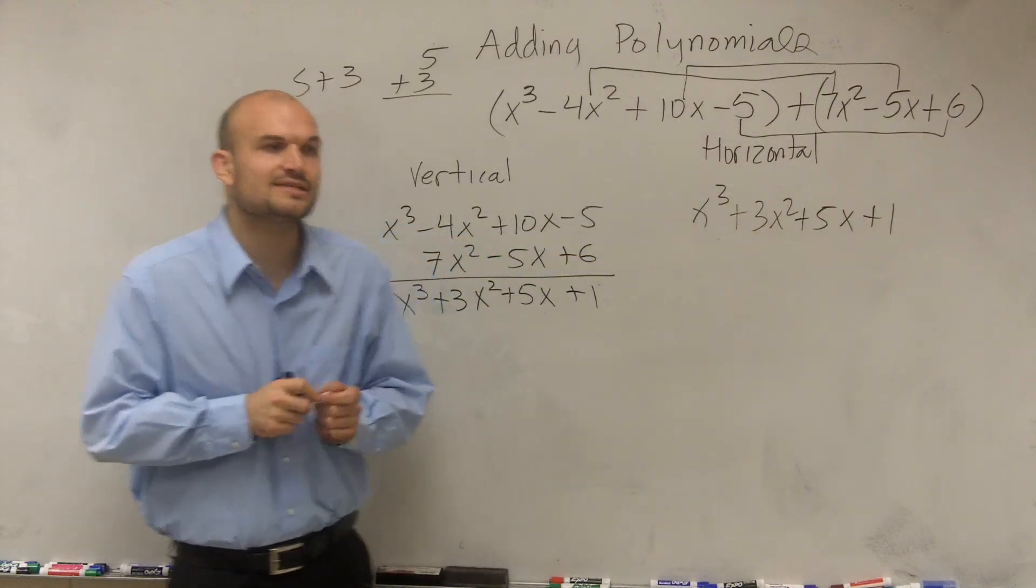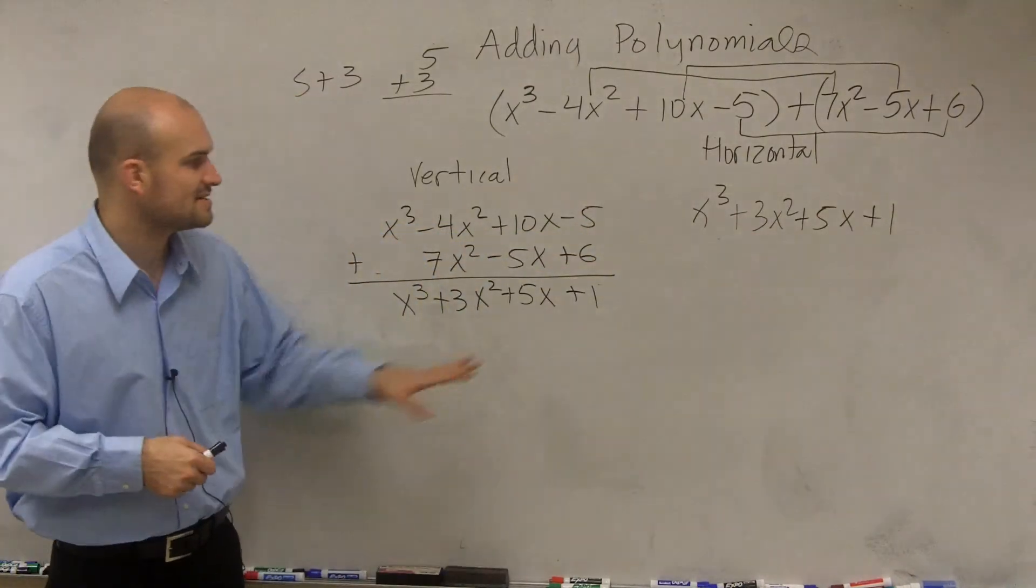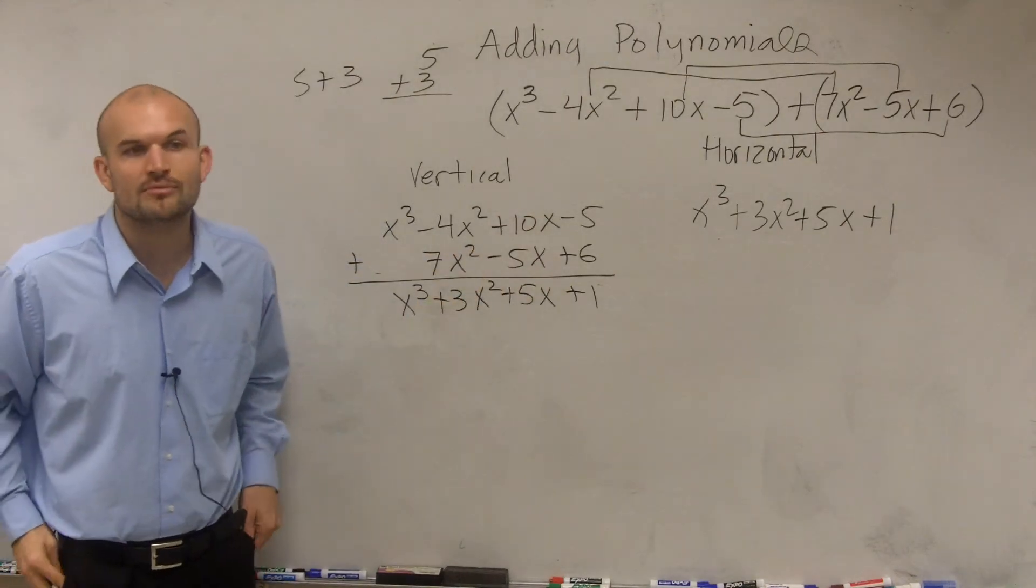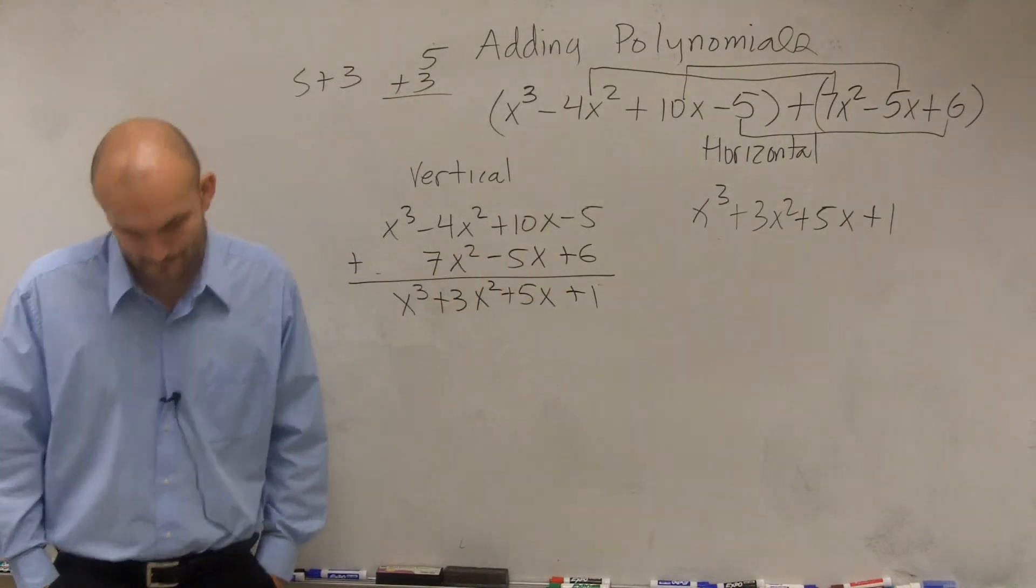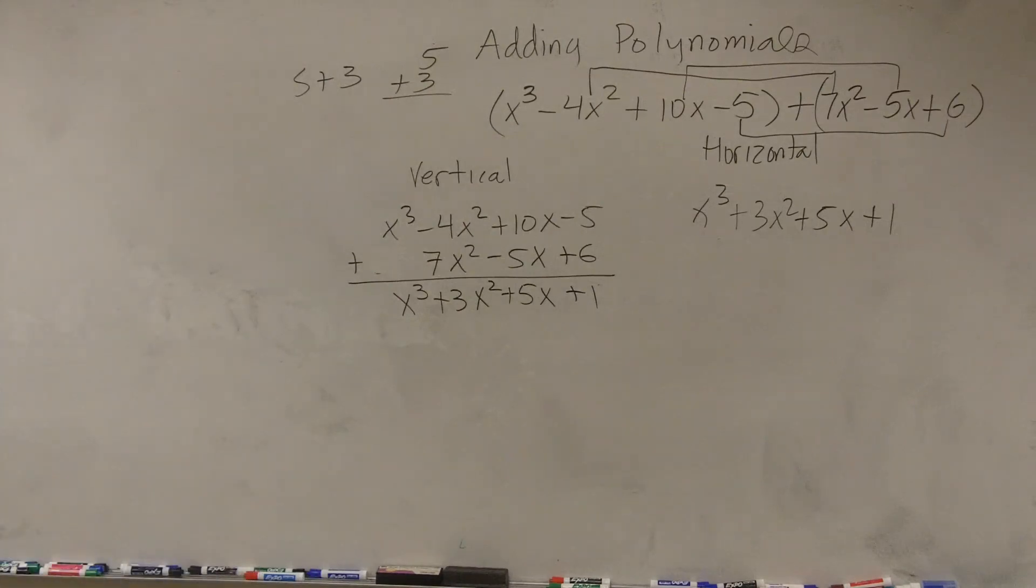I think it's easier, and I guarantee you're going to make a lot less mistakes if you rewrite it in the vertical method and combine like terms. There's adding, let's see.